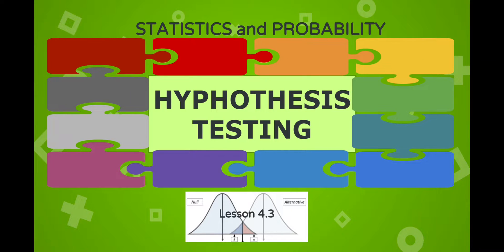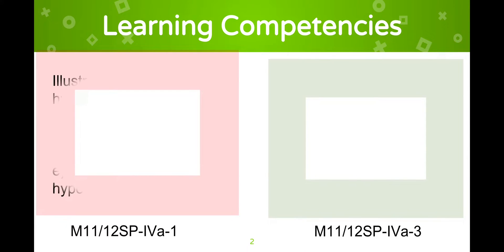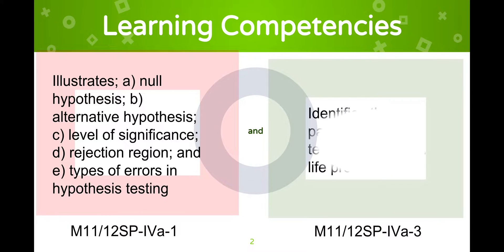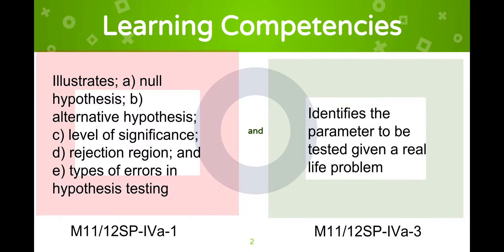Good day, this is Teacher Riza, and this is our lesson 4.3 for the 4th quarter in Statistics and Probability: Hypothesis Testing. The learning competencies include illustrating null and alternative hypotheses, level of significance, rejection region, and types of error in hypothesis testing, and identifying the parameter to be tested given a real-life problem.